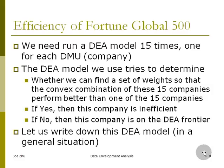So what we need to do is we actually need to run a DEA model 15 times, one for each DMU. In this case, one for each company. In the DEA model, what we try to do is try to determine whether we can find a set of weights so that the convex combination of these 15 companies perform better than one of the 15 companies. If the answer is yes, then this company is inefficient. If the answer is no, then this company is efficient.